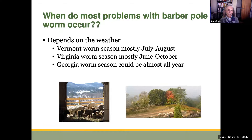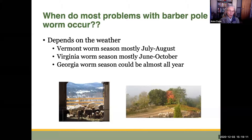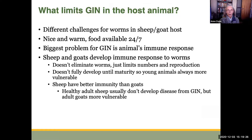When do most problems occur with barber pole worm? They occur when you're getting rapid transmission of the parasite, and that depends on the weather and how far north or south you are. In Vermont, worm season mostly occurs in July and August. In Virginia, worm season can extend from June through October, even into November when temperatures are mild. If you go farther south to Georgia or Florida, you could have worm season almost all year long. So it's the weather that really determines when parasites are most actively transmitted and when most problems will show up.